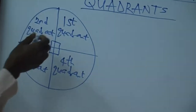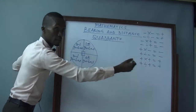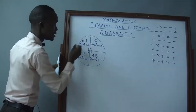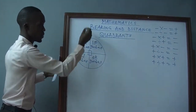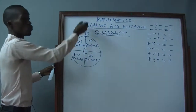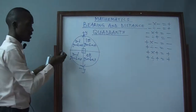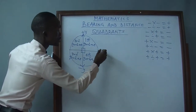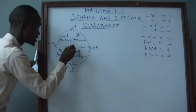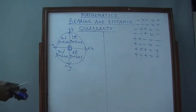From here we have a vertical line and a horizontal line. The vertical line is divided into two parts by the horizontal line. The upper part we call the positive y-axis, and the lower part we call the negative y. The horizontal line: the right side is the positive x, and the other side is the negative x. Where they intersect is our origin.